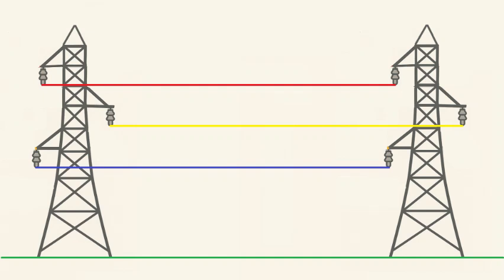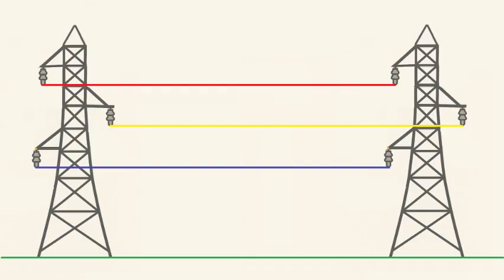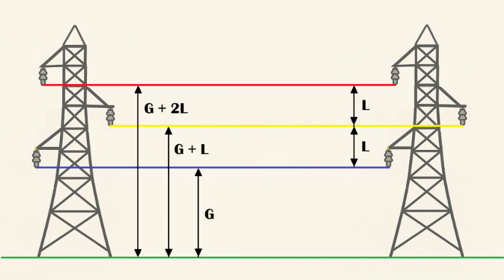Let's start from the basics. What do we mean by transposition? In a three-phase transmission system, three conductors carry current from the generation station to the load center. Ideally, these conductors should have identical electrical parameters like inductance and capacitance. But in practice, that's not the case. Due to the physical arrangement of conductors, say one conductor is placed at the top, the second a bit lower, and the third at the bottom, the distances between the conductors and the ground aren't equal.